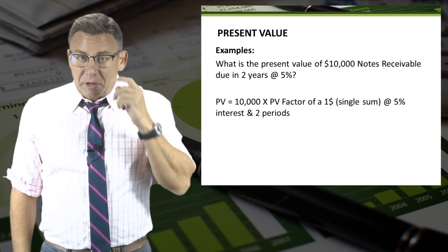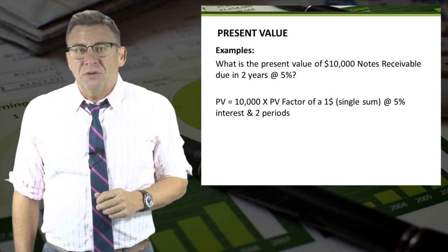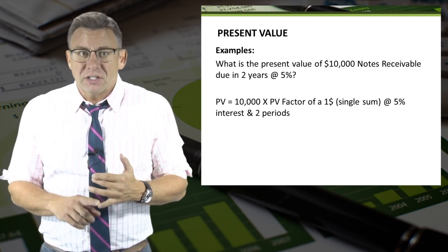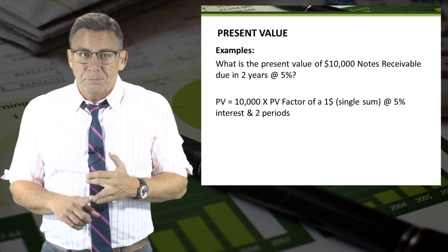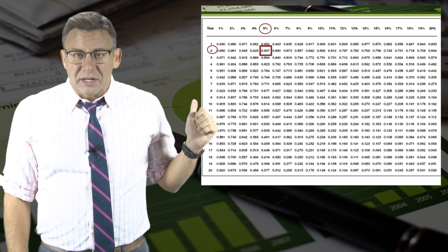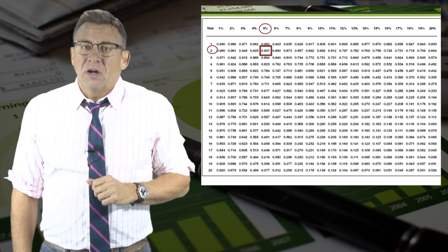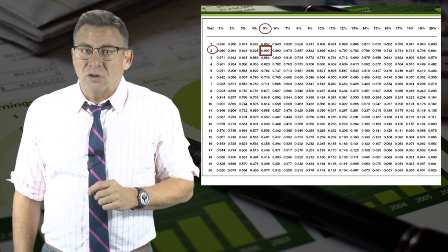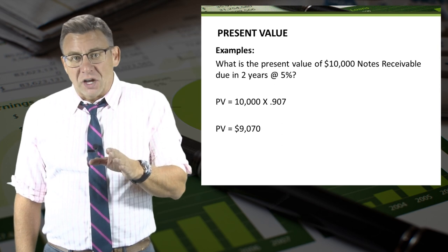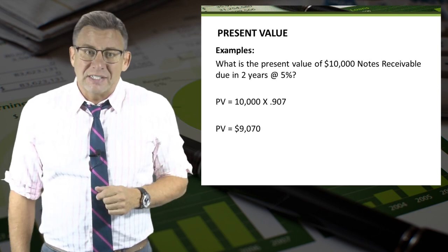We need to use the formula, which in this case is 10,000 times the present value factor of a dollar at 5% interest for two periods. I've identified 5% and two periods on the table. Where they intersect is the present value factor of .907. So the present value of $10,000 due in two years at 5% interest is $9,070.